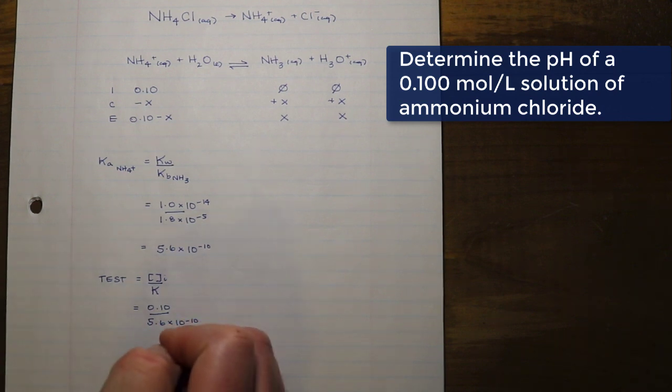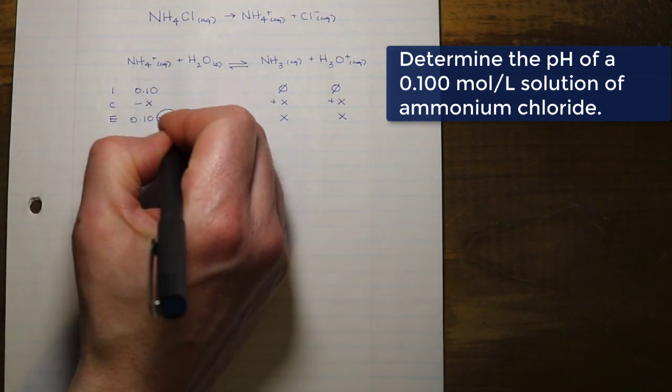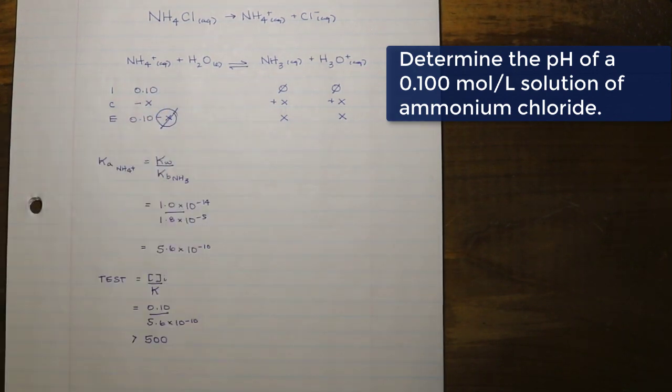Make sure that you are using the Ka for this, not the Kb. I'm not even going to go through this calculation. Look at the value of the denominator, it's extremely small. I know just by eyeballing this it's going to be way larger than 500. So what that tells me now is my test is valid and I can make my calculations a lot easier by negating x.